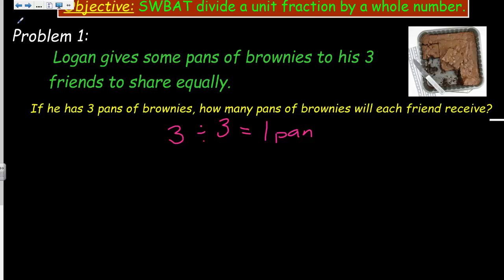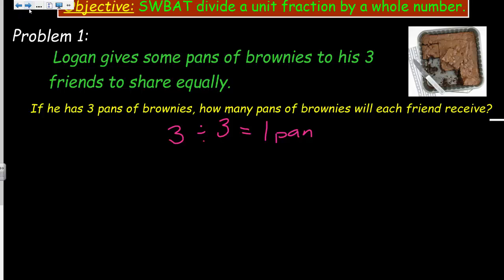All right, well then, you know what? Let's challenge ourselves, shall we? Yeah, welcome to the dark side. Sorry, I don't know why they gave her Luke Skywalker. Now, let's go on. Problem two. Mr. Wara, please keep it together. Okay. It says, Logan gives some pans of brownies to his three friends to share equally. Okay, I put that up there again just to remind ourselves of the problem that we're working on. But look, now it says, if he has one pan of brownies, how many pans of brownies will each friend receive? A little more challenging, eh?